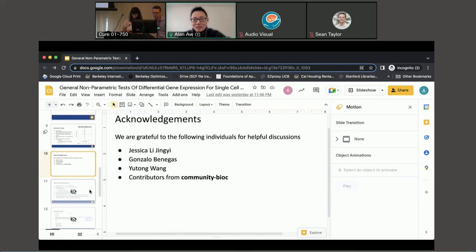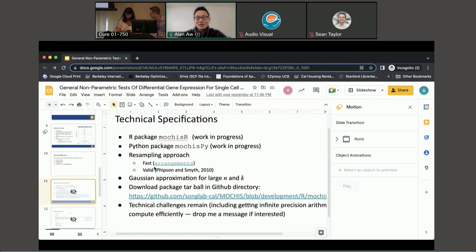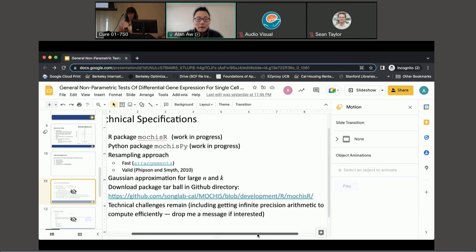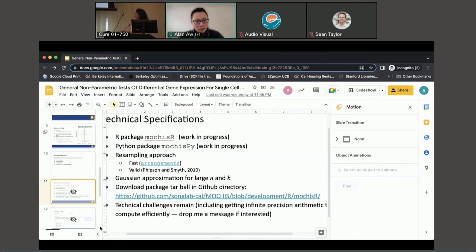I see Ryan has a question about the availability of the code. That's a great question. Can everyone see this? We basically have the package on GitHub, so right now it's still work in progress, but we have the function that can run the p-value computation and it's already packaged up in a tarball. You can just download it and install it as an R package as you would a typical R package.